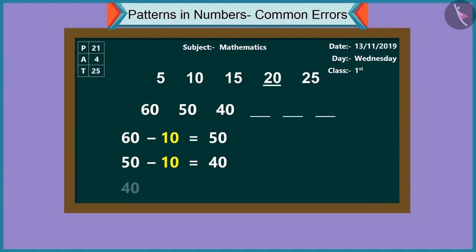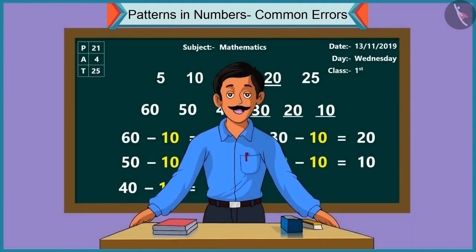Hmm. Subtracting ten from forty, we get thirty. Subtracting ten from thirty, we'll get twenty. Subtracting ten from twenty, we'll get ten. Absolutely correct.